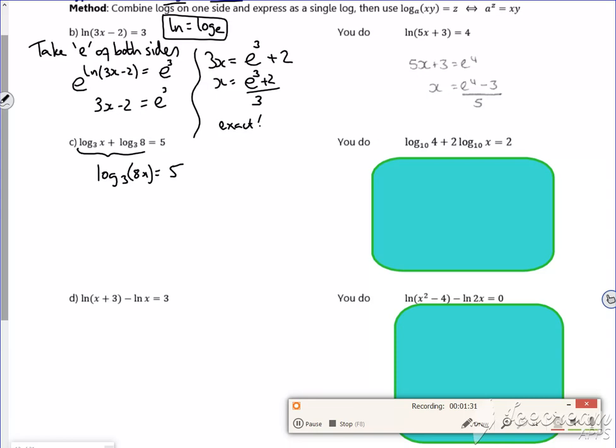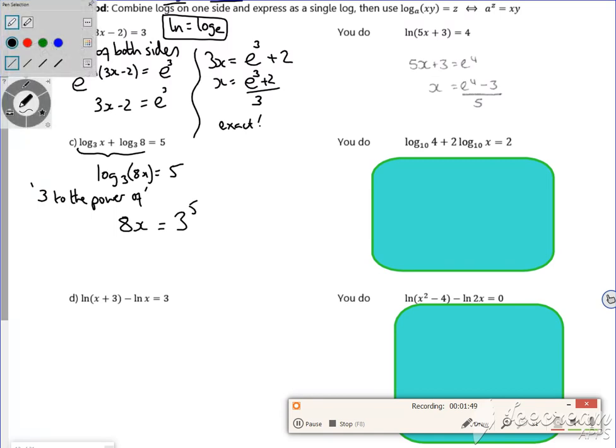And then, so I'm going to do, so taking e of both sides, I'm going to do 3 to the power of, because that will remove the log, and I just have an 8x is 3 to the power of 5. So what I've really got there, I'm just looking at a different colour. So that bit there is 3 to the power of log to base 3 of 8x, and then cancel.